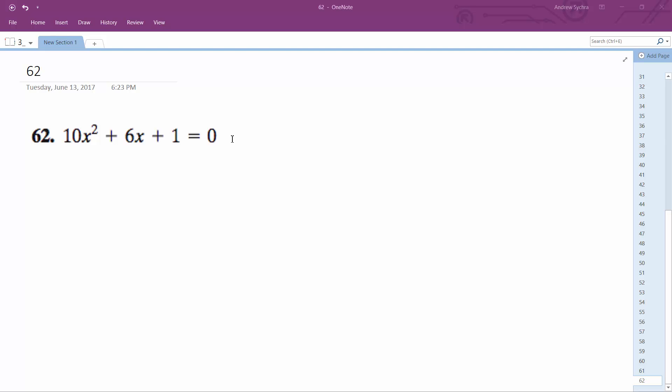Solve this problem. We're going to use the quadratic formula which is the opposite of b plus or minus the square root of b squared minus 4ac all over 2a.